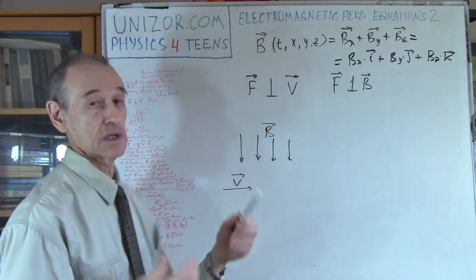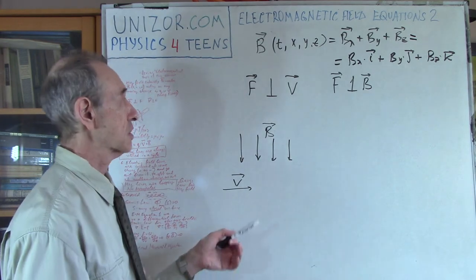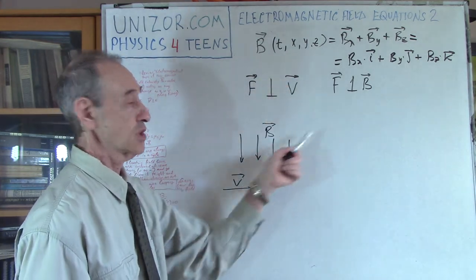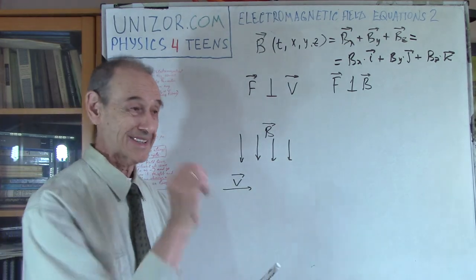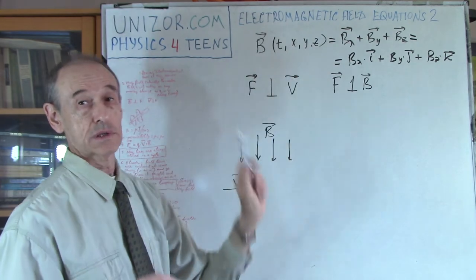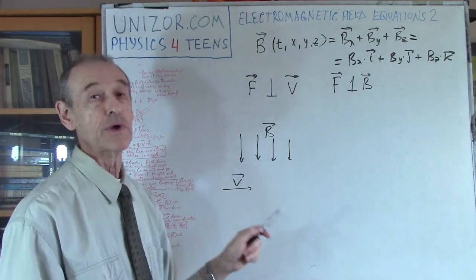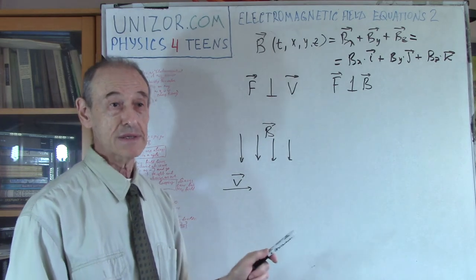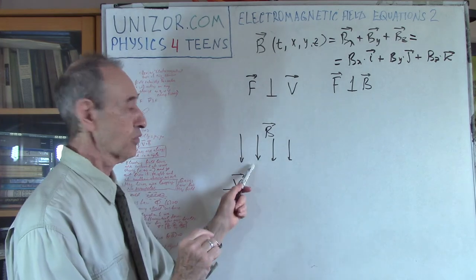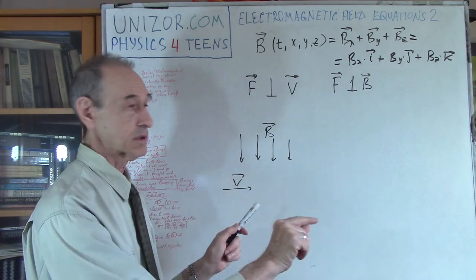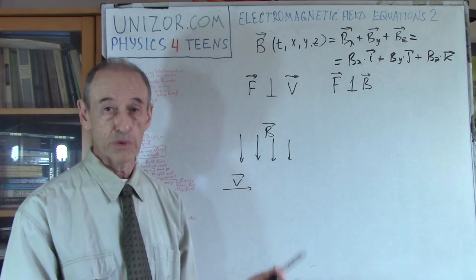The direction is determined by the direction of both vectors. If you change one to the opposite, the force changes to the opposite. But in any case, it will be along the line perpendicular to the whiteboard — perpendicular to B and perpendicular to V, and that's why it's perpendicular to the whole plane where these two are located. Sometimes B doesn't have to be uniform — it can change with time and with position. But at any point in time and space, there is a vector B, and there is a velocity vector, and there is a force vector perpendicular to both.